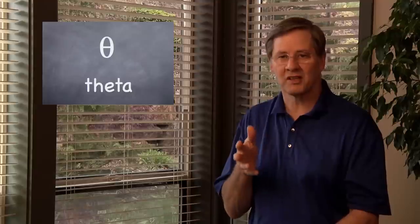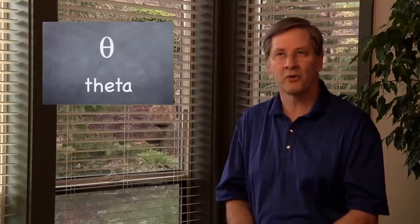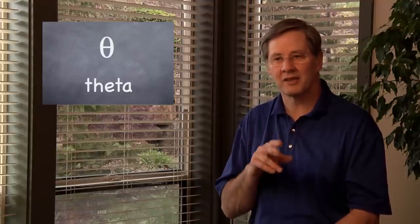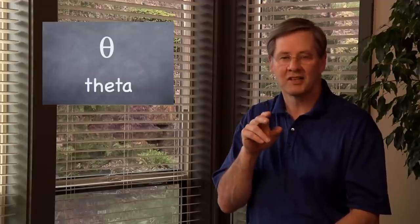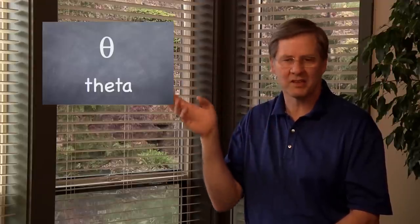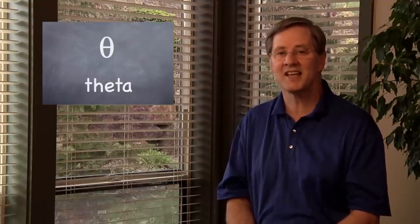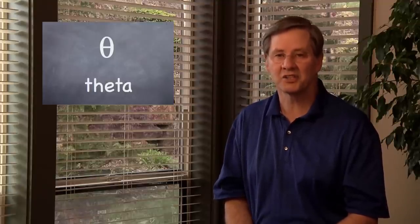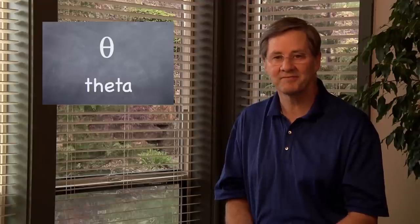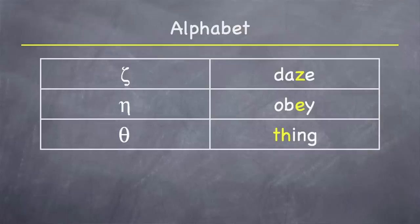Then the next one is theta. There are four letters in Greek pronounced with two sounds like T-H or P-H. This is the first of them: theta, the T-H sound like in the English word 'thing.' So let's say all of them from the beginning: alpha, beta, gamma, delta, epsilon — zeta, eta, theta.